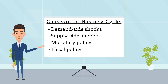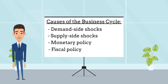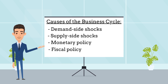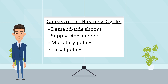Supply-side shocks — these are sudden changes in the availability or cost of production inputs, such as labor or raw materials, that can cause a shift in economic activity. For example, a natural disaster or war can disrupt the supply chain, leading to a decrease in economic output.